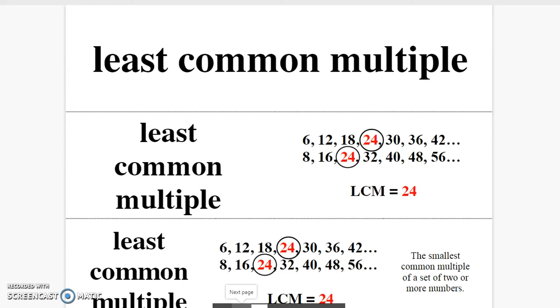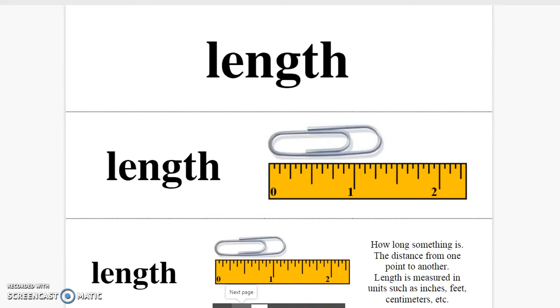Least common multiple. The smallest common multiple of a set of two or more numbers. Length. How long something is, the distance from one point to another.